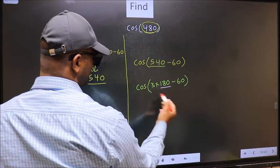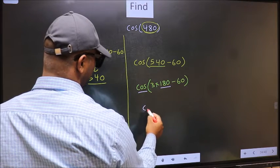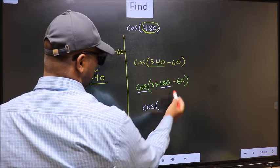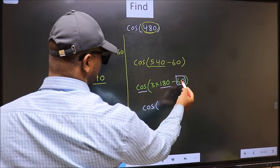Next, here we have 180. So, cos is not going to change. It will remain cos. And inside, we get this angle 60.